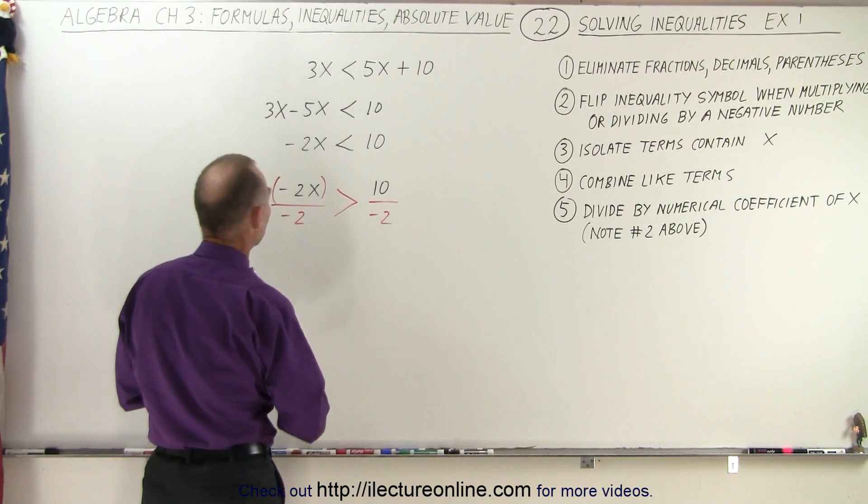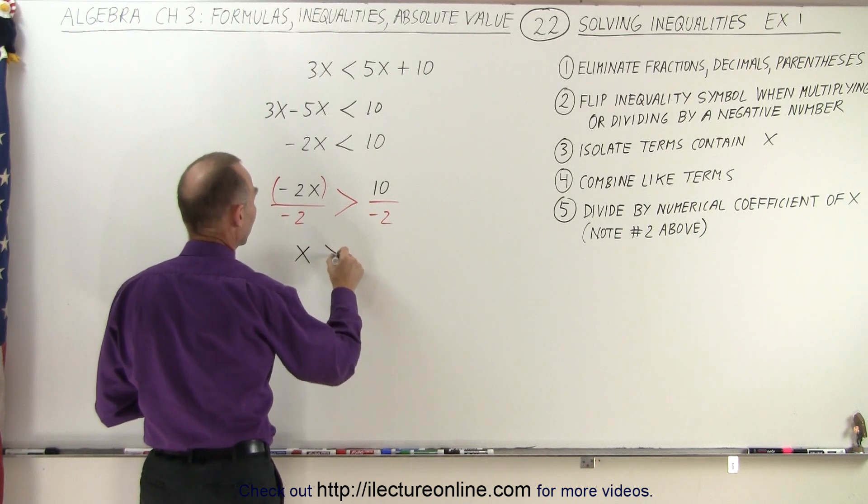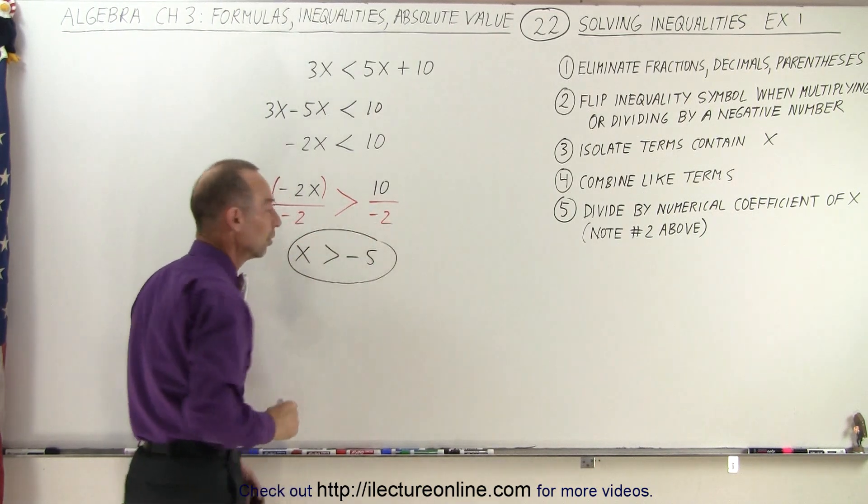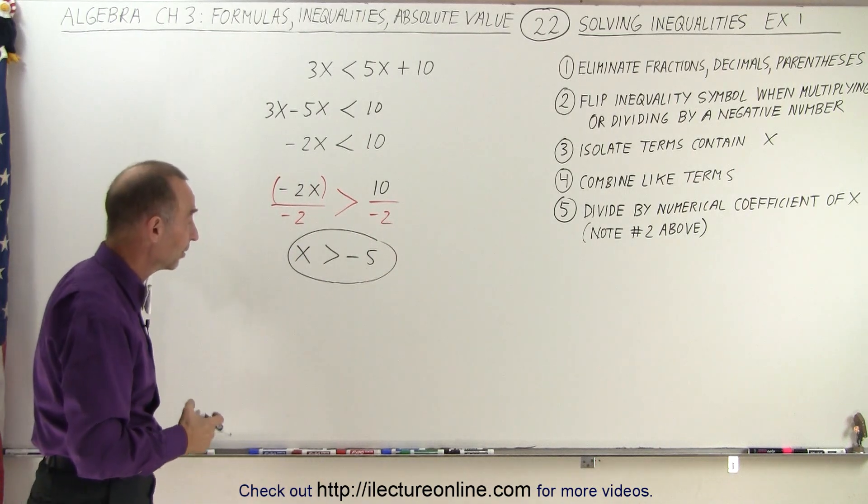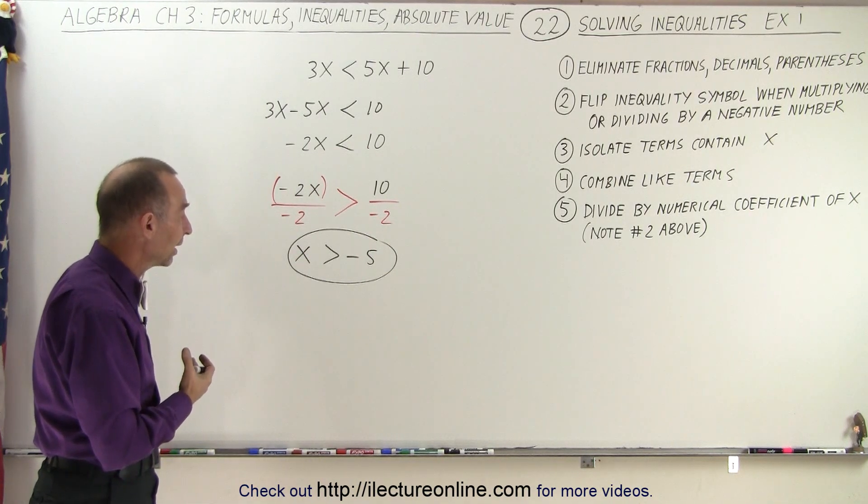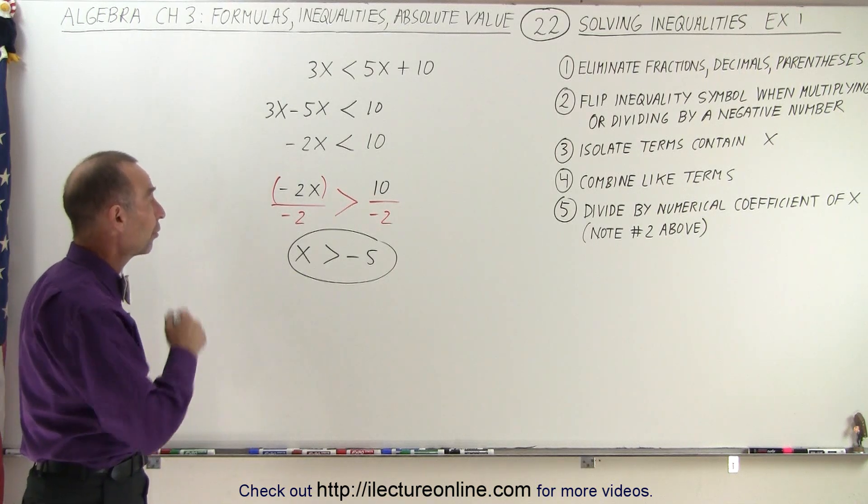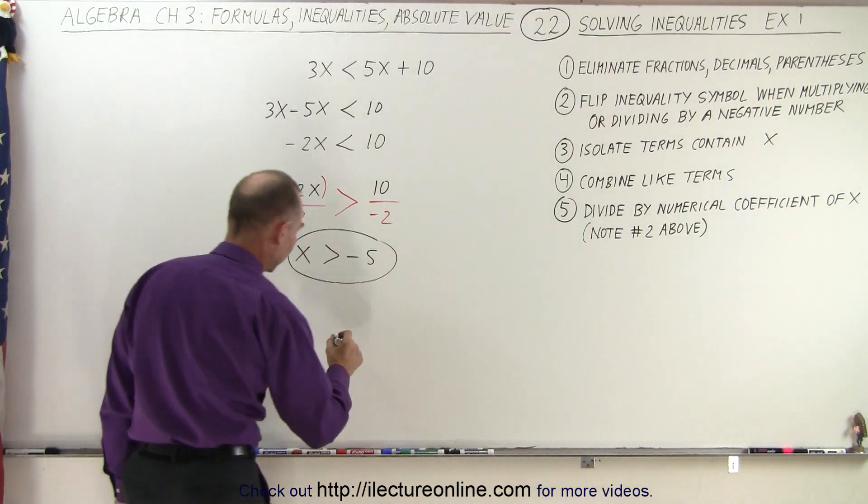So on the left side, we end up with a positive x is greater than a negative 5. And so that would then be the solution. We're looking for all values of x, so any number that is greater than negative 5, not including negative 5, solves that inequality or satisfies that inequality.